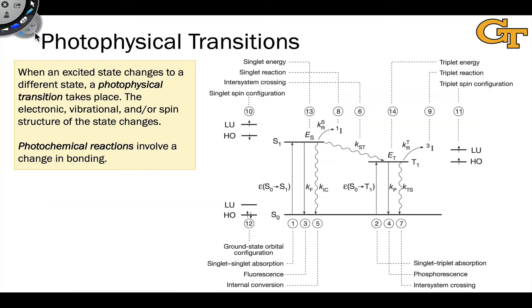Let's briefly talk about photophysical transitions. Recall that we defined photophysics or a photophysical process as one that converts an excited state to a different excited state or back to the ground state without chemical change, without bonds made or broken. This is what we refer to as a photophysical transition.